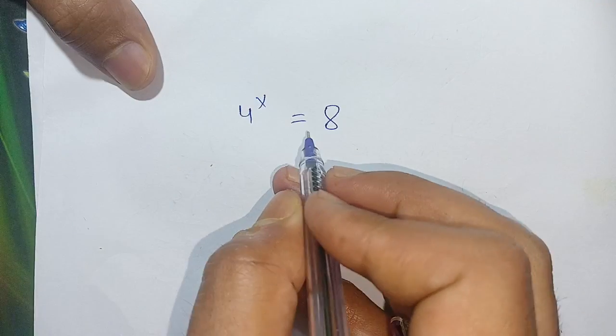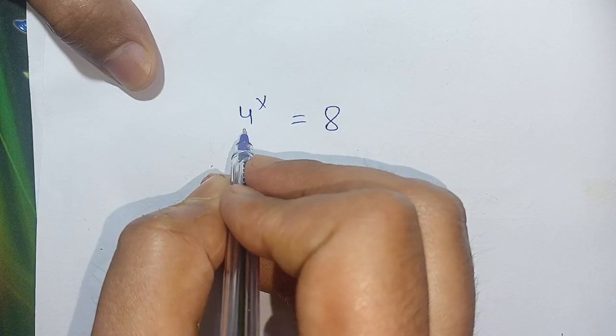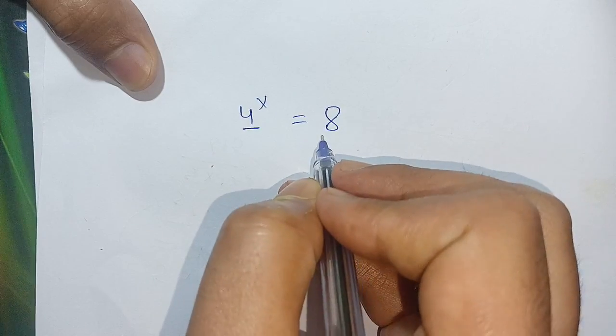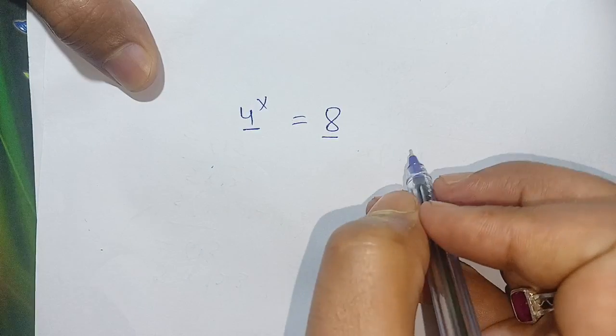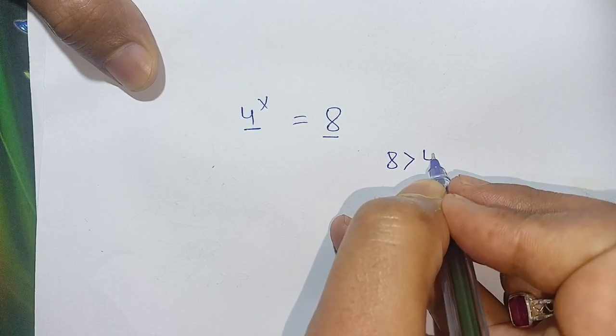Hello everyone, how to solve this exponential equation 4^x = 8. Here you see that the base is 8 here and the base is 4, and we can write this as 8 is greater than 4.